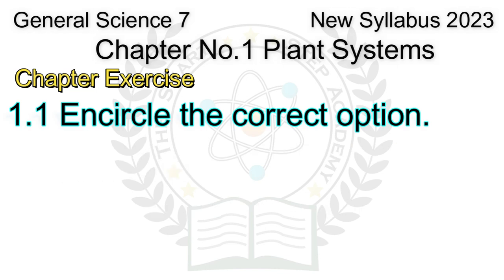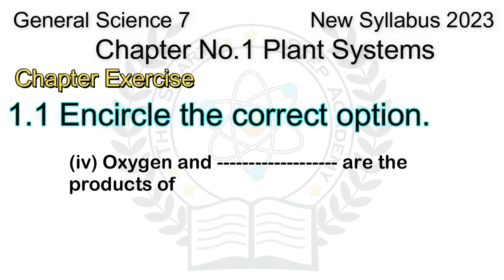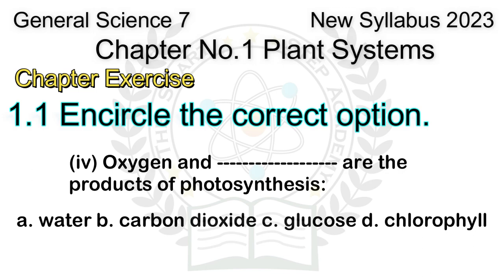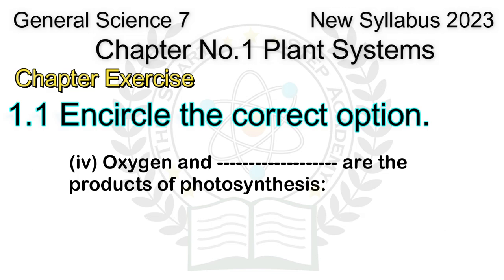Question 4: Oxygen and ___ are the products of photosynthesis. A. Water, B. Carbon dioxide, C. Glucose, D. Chlorophyll. Answer: C. Glucose.